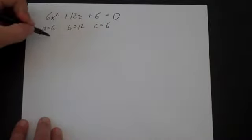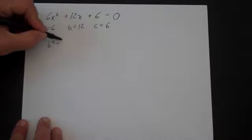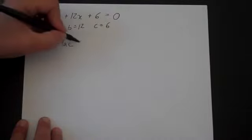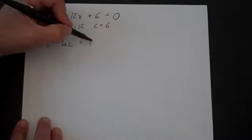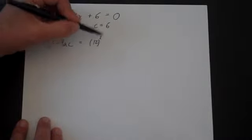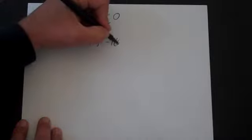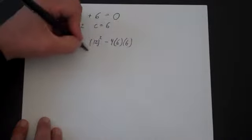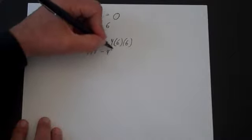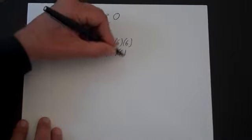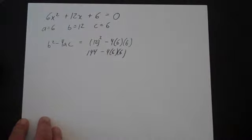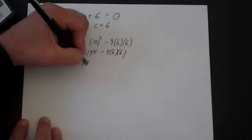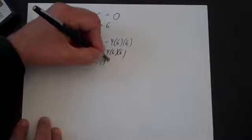And what we're going to have here is b squared minus 4ac. Let's plug our numbers in and we end up with 12 squared minus 4 times 6 times 6. And that's 144 minus 4 times 6 times 6. 4 times 6 times 6 is going to be 144. So you get 144 minus 144 is zero.